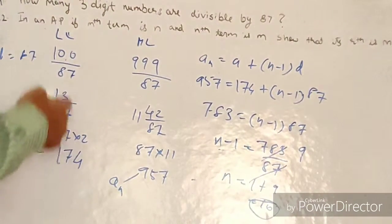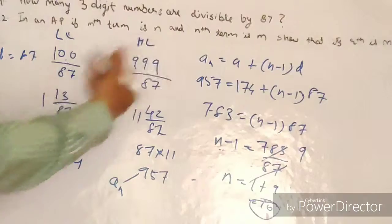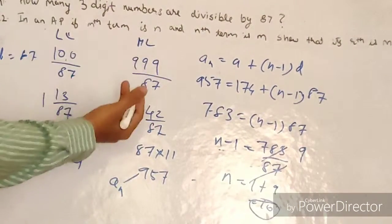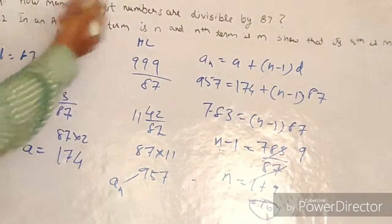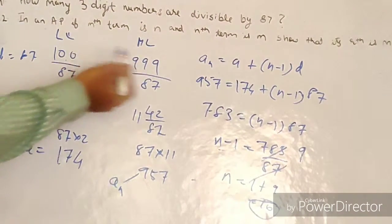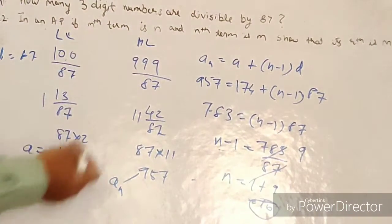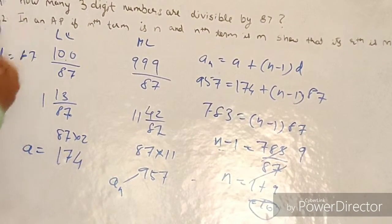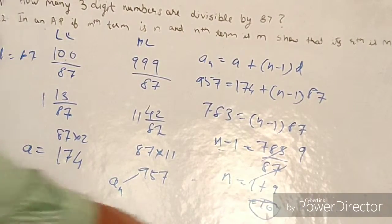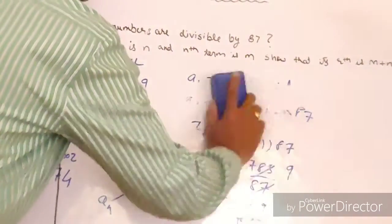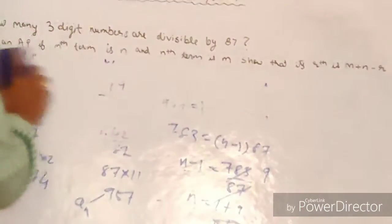This is how we approach this problem — we applied the general formula for finding the nth term and got the total count of three-digit numbers divisible by 87, which is 10. Now let's move to the second question, applying the same formula.